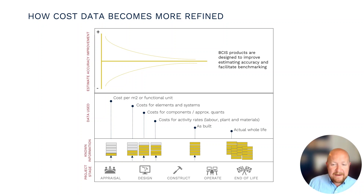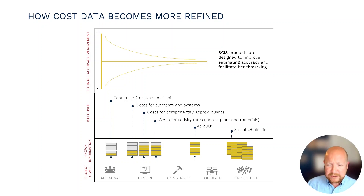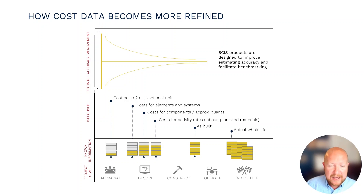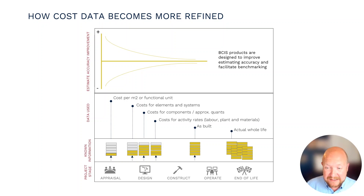Here we have a cone of uncertainty — a kind of funnel leading us through greater accuracy towards the holy grail of absolute cost certainty, which of course none of us can ever attain. At the appraisal stage, tolerances in our cost estimates can range quite considerably — above or below, in some cases well over plus or minus 50 percent. As we get more information, the more accurate those cost predictions become.